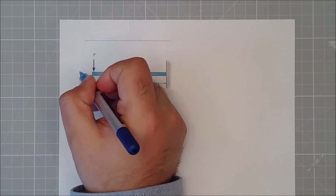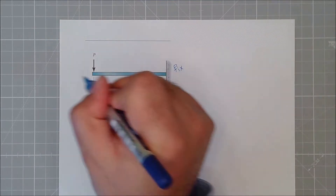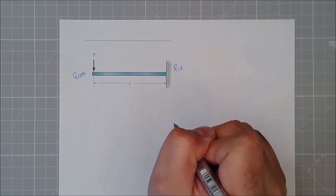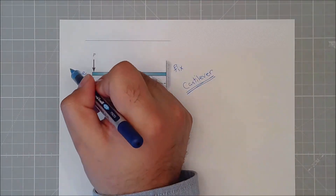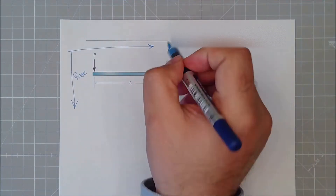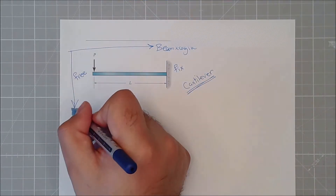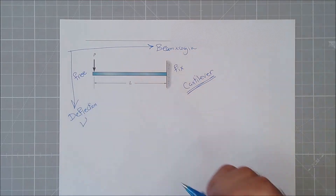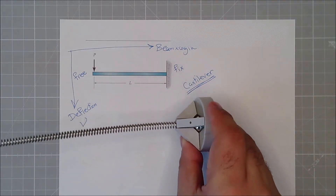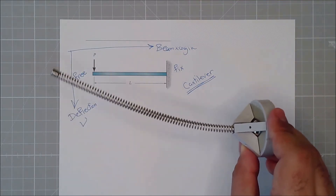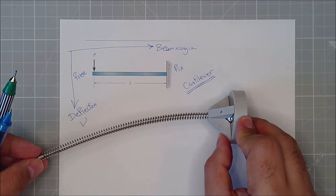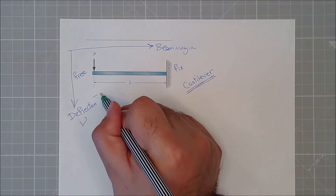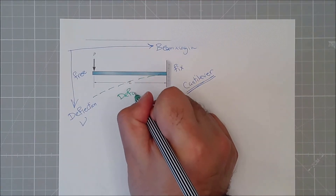Let's quickly do this beam as well, which has a fixed support and a free end — this is what we were calling a balcony or a cantilever. Let's draw the axis as a guide: this is the beam length and this is the deflection. Can you guess the deformed shape? Fixed end, free end — if I apply a load downward, the deformed shape will be something like this.